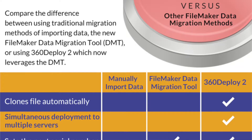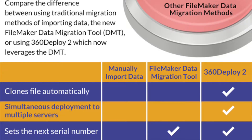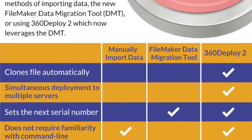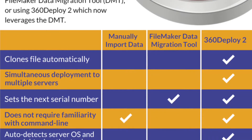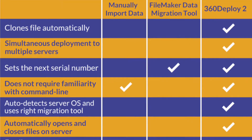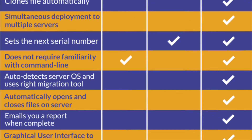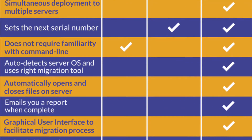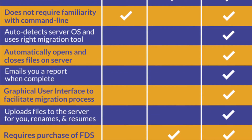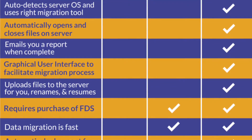Let's take a look at 360 Deploy 2 in comparison to other data migration methods. 360 Deploy 2 clones the file automatically, allows for simultaneous deployment to multiple servers, sets the next serial number, does not require familiarity with the command line, auto-detects server operating system and uses the right migration tool, automatically opens and closes the file on the server, emails your report when complete, has a graphical user interface to facilitate the migration process, uploads files to the server for you, renames and resumes. It does require the purchase of the FileMaker developer subscription because it uses the FileMaker data migration tool, and because of this, data migration is fast.